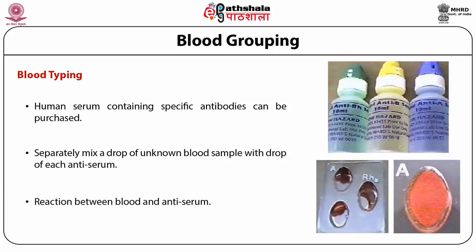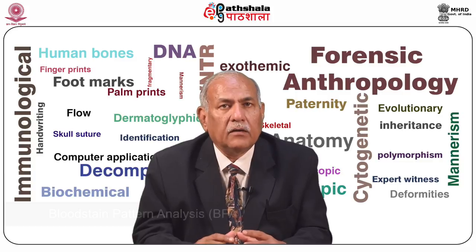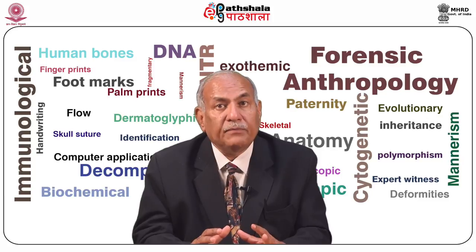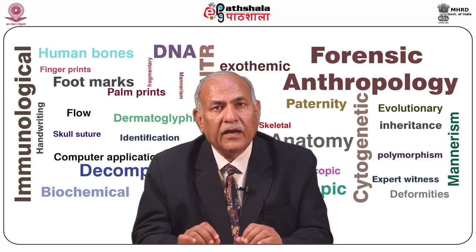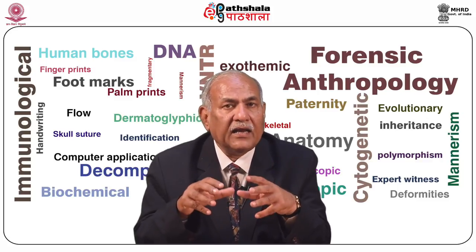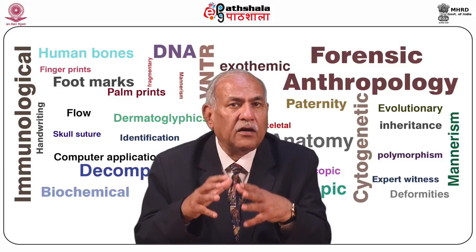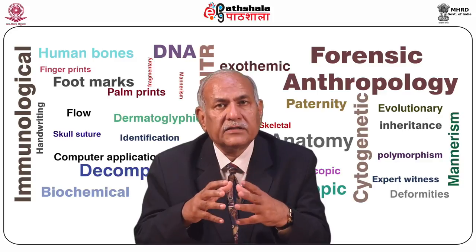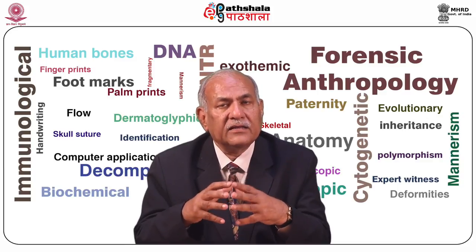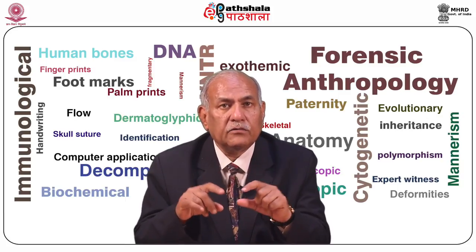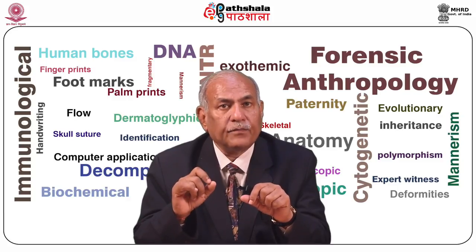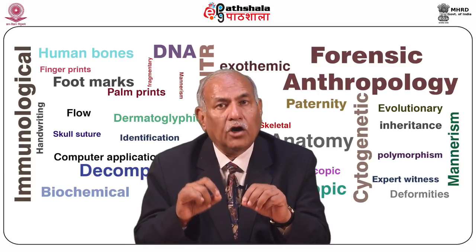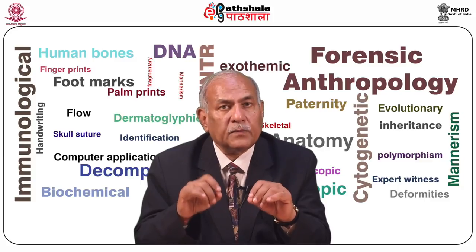Blood spatter analysis: blood stain pattern analysis (BPA) is defined as the examination of the shapes, size, locations and distribution patterns of blood stains, in order to provide an objective analysis of the physical events that gave rise to their origin, by application of concepts of biology, biochemistry, physics and mathematics. These concepts help define and reconstruct events associated with a bloodletting event, and may also provide investigative leads, support or refute evidence for victim, suspect and witness statements.